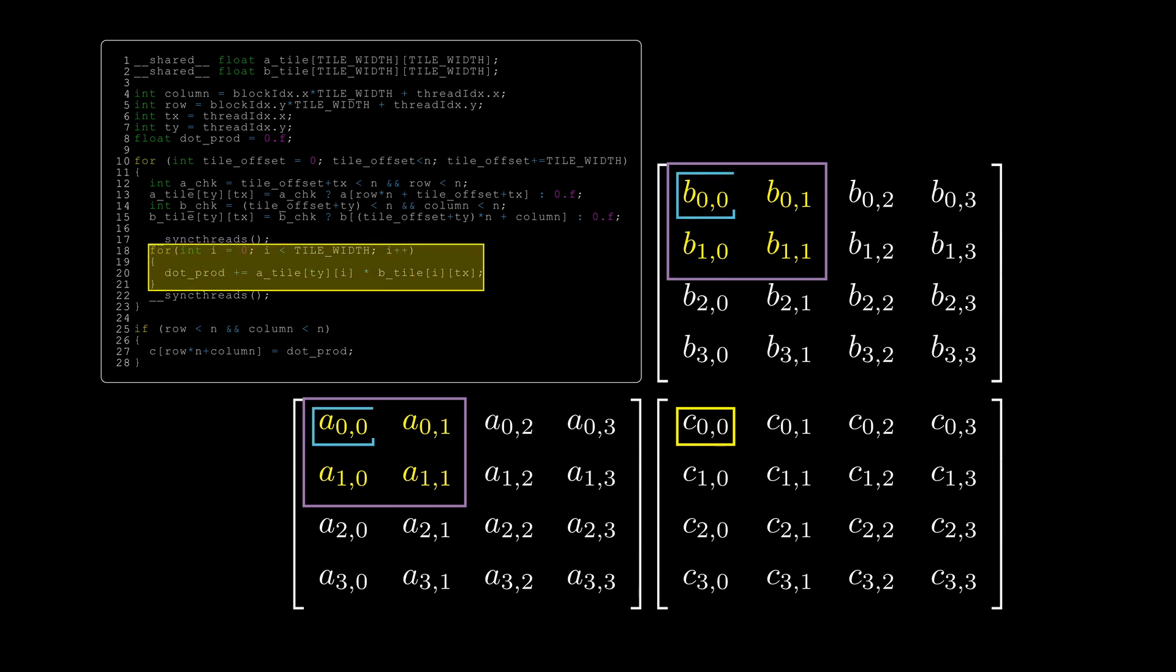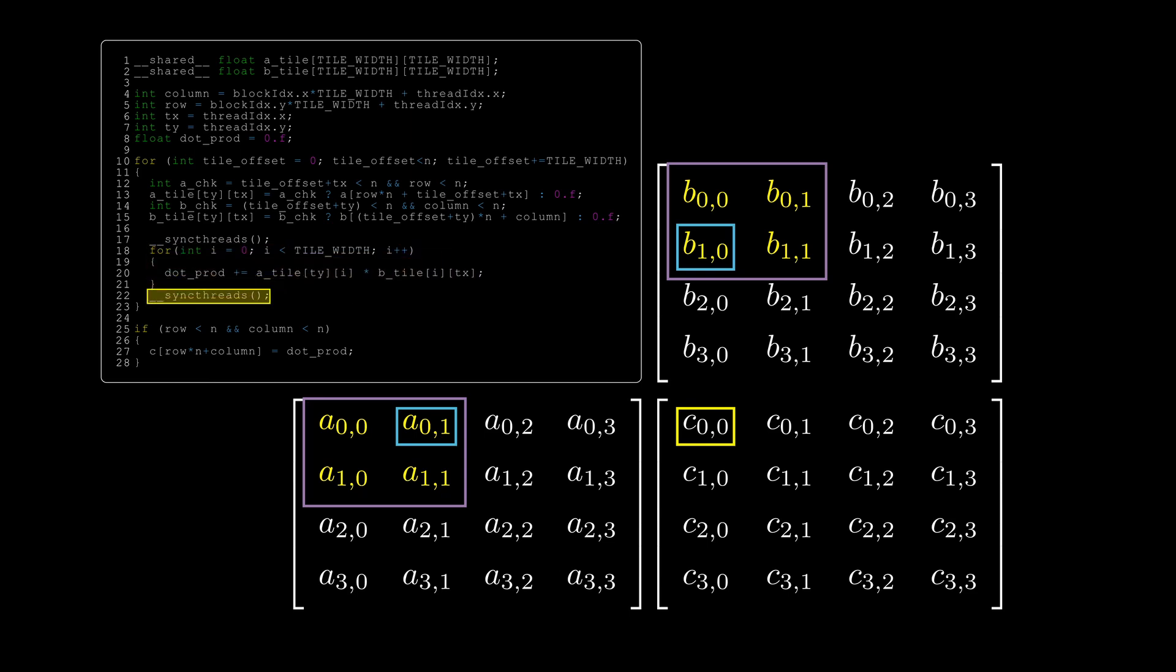After we are sure that all of the variables are inside shared memory, we use them to calculate the part of our dot product for the output element. And we synchronize our threads again, so that we don't overwrite any variables inside our shared memory while we are still working on them.